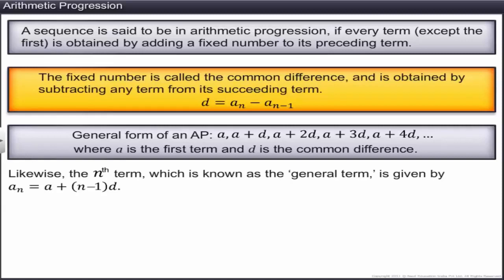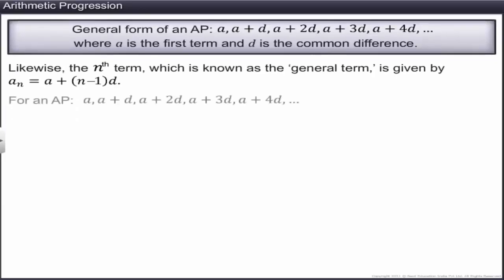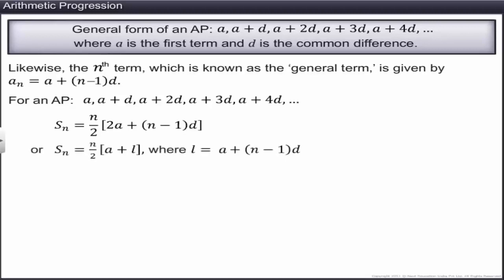With the help of the general term, we can find any required term in the sequence without actually finding the preceding terms. The sum of the first n terms of an arithmetic progression is n/2 × (2a + (n−1)d), or n/2 × (a + l), where l is the nth term or the last term of the arithmetic progression.